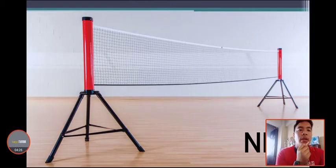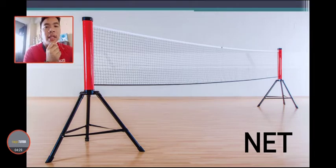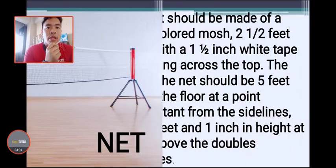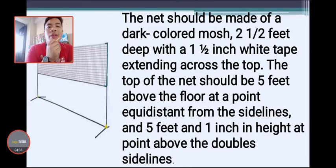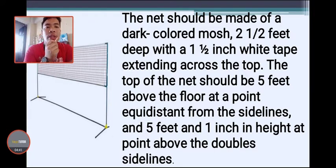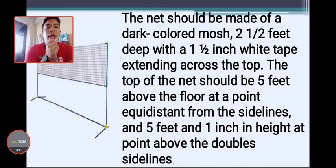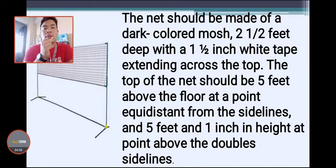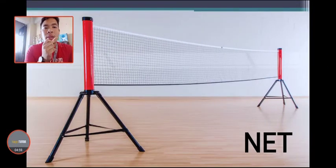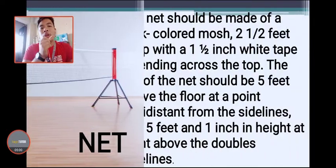The net should be made of dark-colored mesh, two and one-half feet deep with a one and one-half inch white tape extending across the top. The top of the net should be five feet above the floor at the point equidistant from the sidelines, and five feet one inch in height at the point above the doubles sideline.